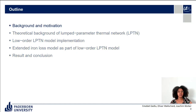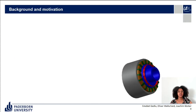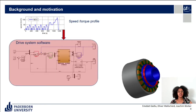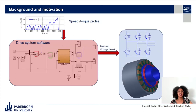Let's start with background and motivation. The electric machine under consideration is a water-cooled PMSM for an automotive application. We have a speed and torque profile and a drive system software — a field-oriented current controller — which gives us the desired voltage level to achieve this profile using pre-recorded machine data and real-time measurements of current and angular position.